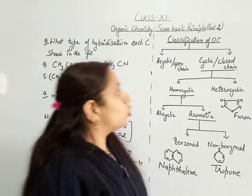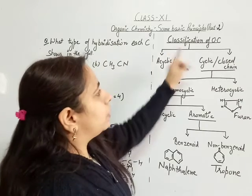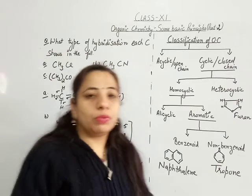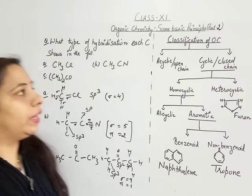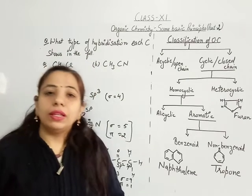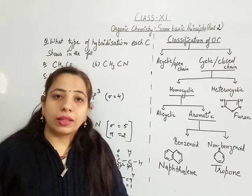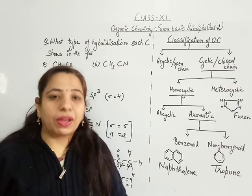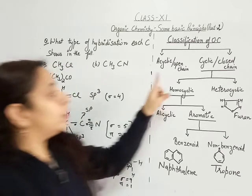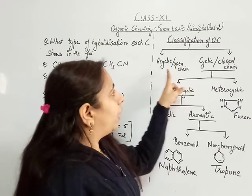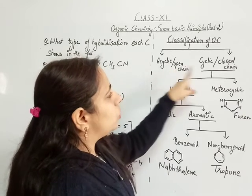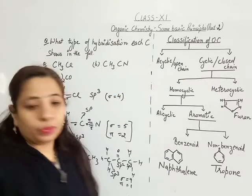Starting with the next topic: classification of organic compounds. Organic compounds are compounds containing carbon, and we can classify or group them in different ways. The first way to classify them is by open chain or closed chain structure.